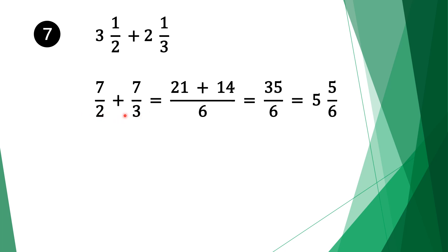So we multiply 2 and 3 to get a common factor. 2 times 3 is 6, which is the common factor of 2 and 3. 6 divided by 2 is 3, 3 times 7 is 21. Move along the plus sign. Do the same for the second fraction: 6 divided by 3 is 2, 2 times 7 is 14. We add 21 and 14 which is 35, and bring the denominator 6. Since it's an improper fraction, we write it as a mixed fraction: our final solution is 5 and 5 sixths.